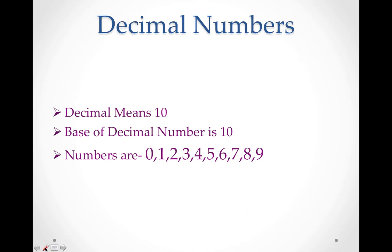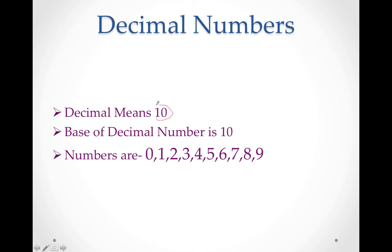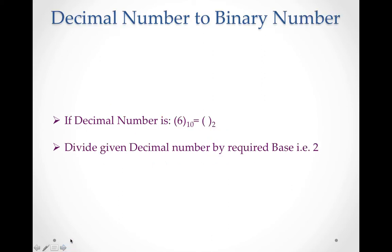Let's start. First, the meaning of a decimal number: 'decimal' means 10. The base of a decimal number is 10. When representing any number, always write it with its base — that is very important. The digits used are 0 to 9, a total of 10 numbers.